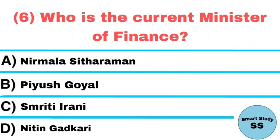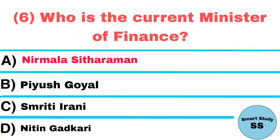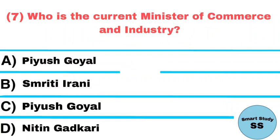Question number 6: Who is the current minister of Finance? Answer: Nirmala Sitharaman. Question number 7: Who is the current minister of Commerce and Industry? Answer: Piyush Goyal.